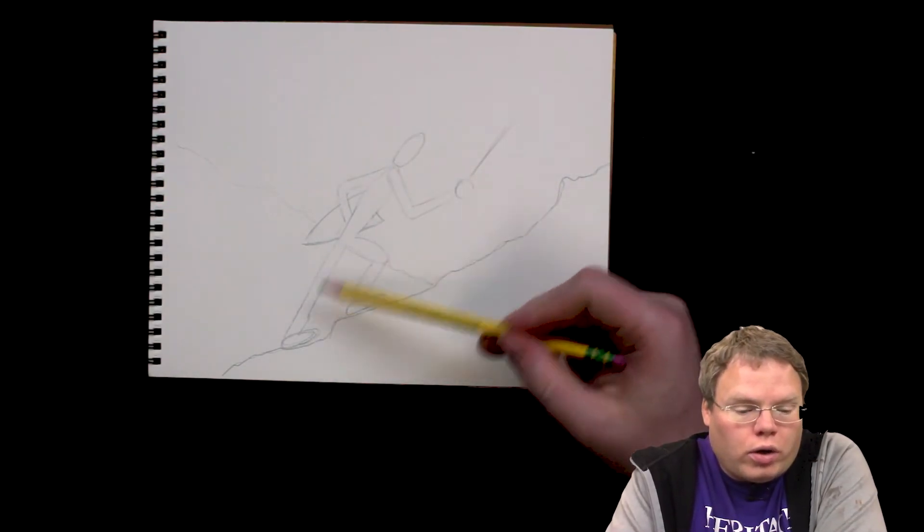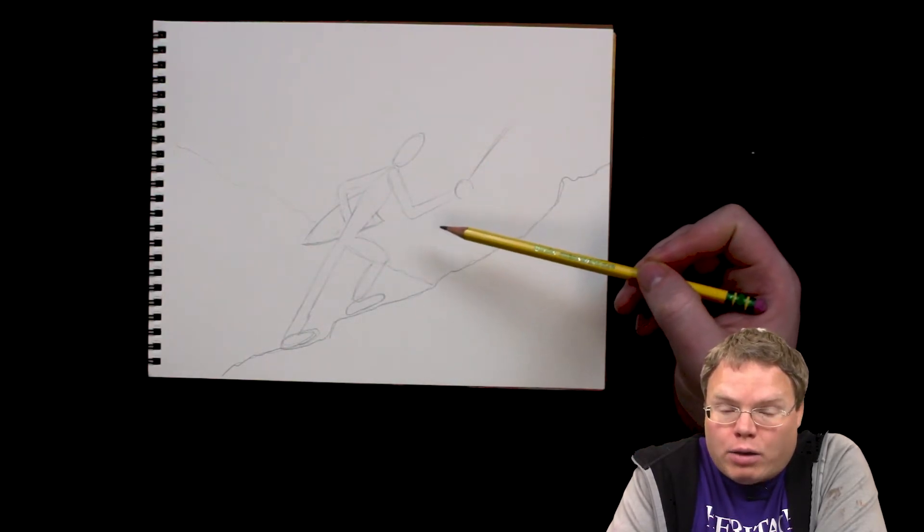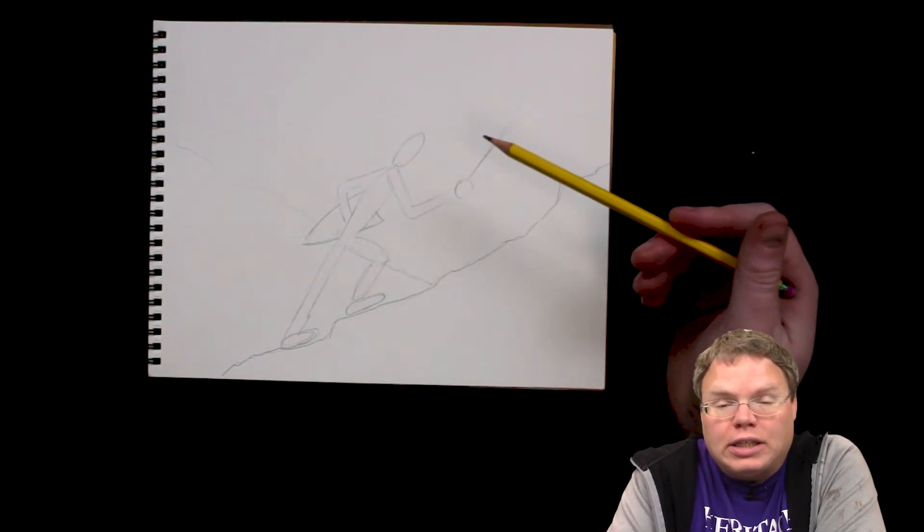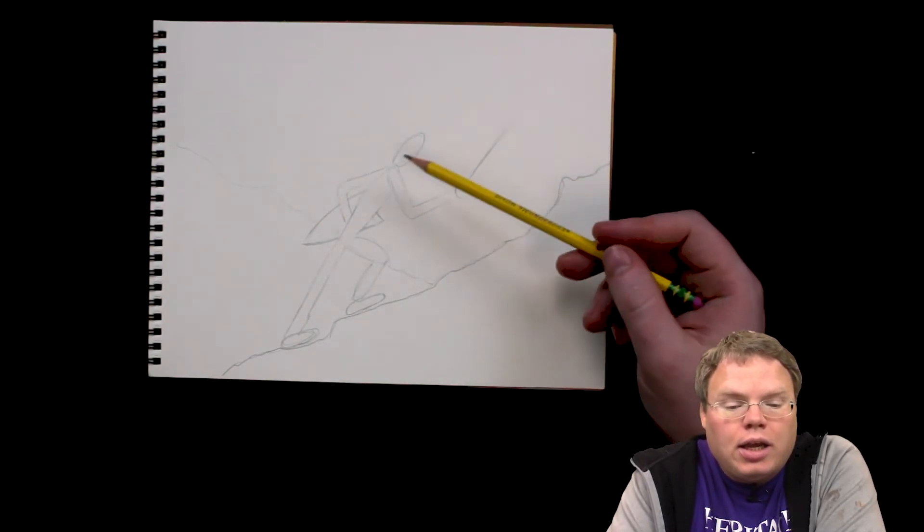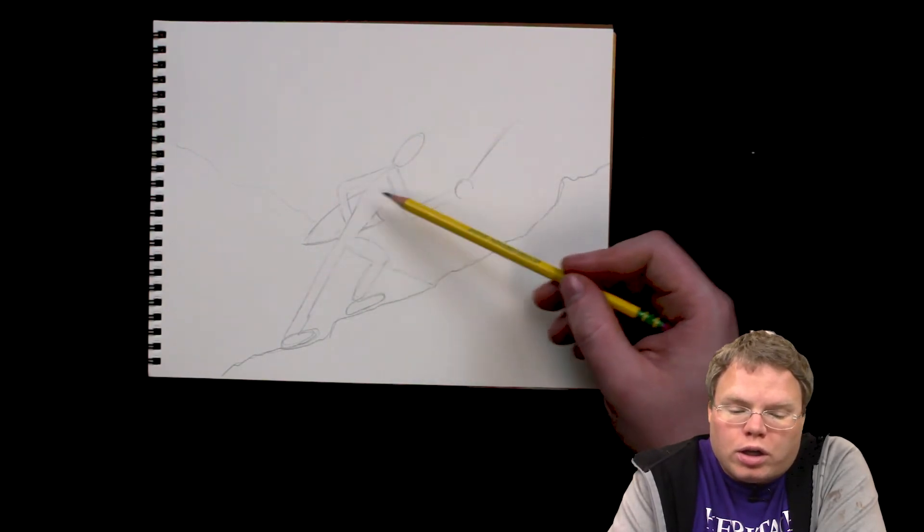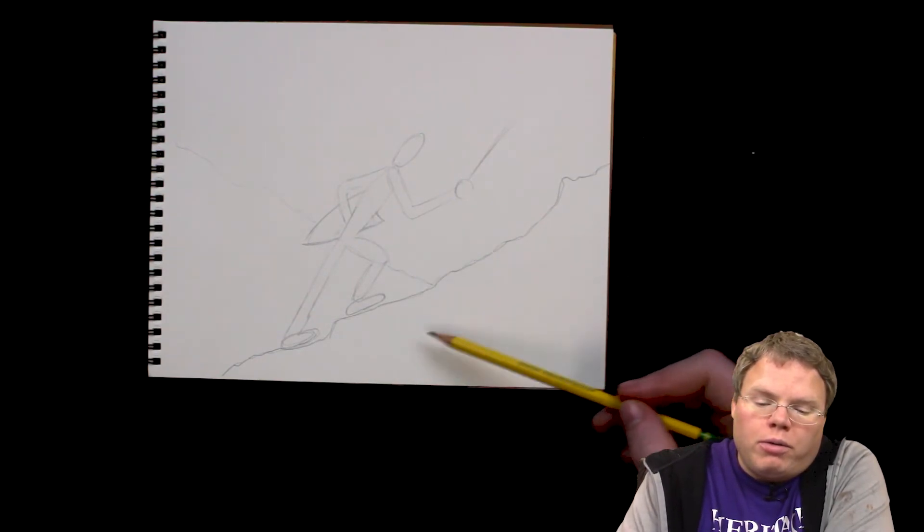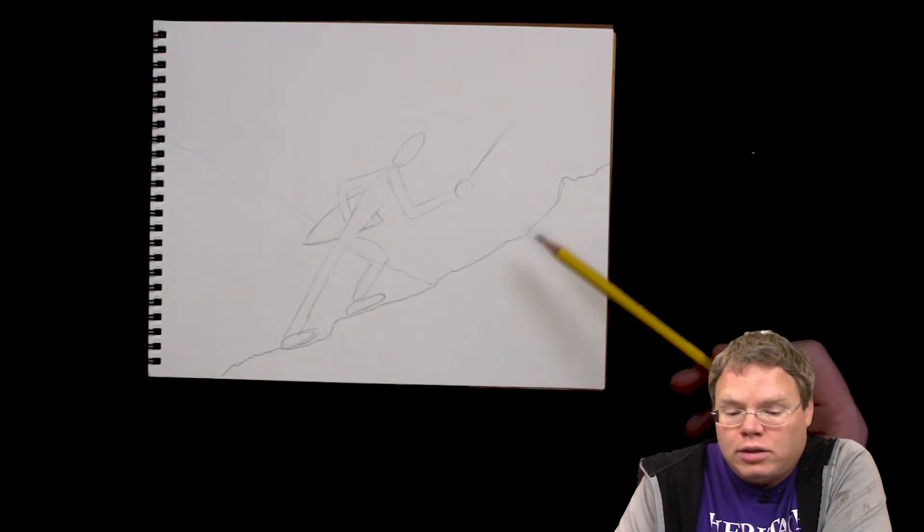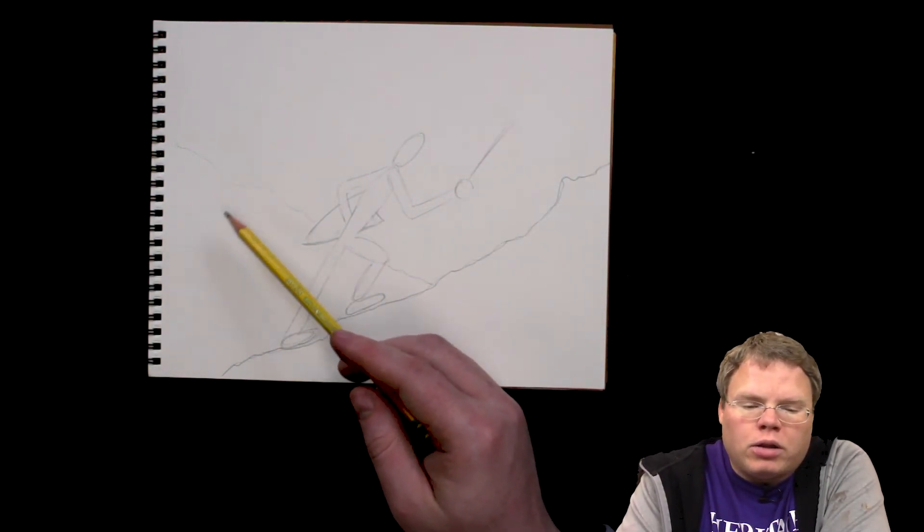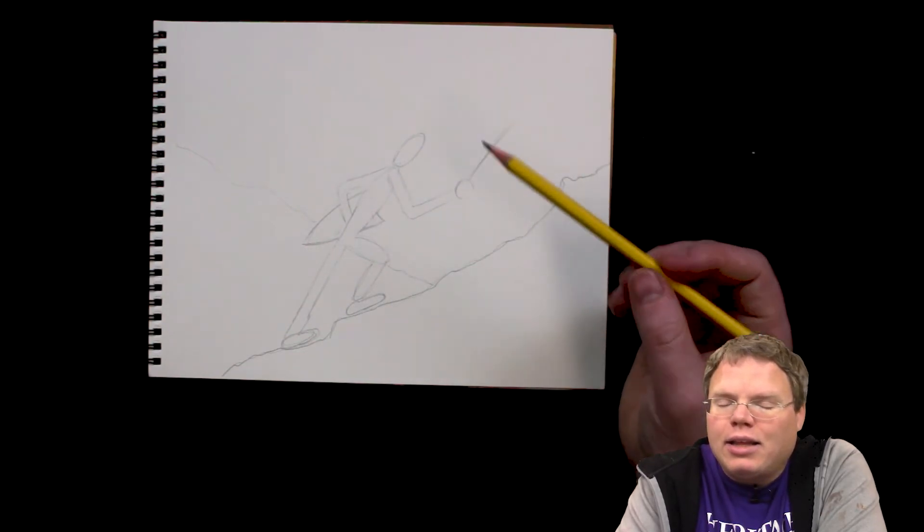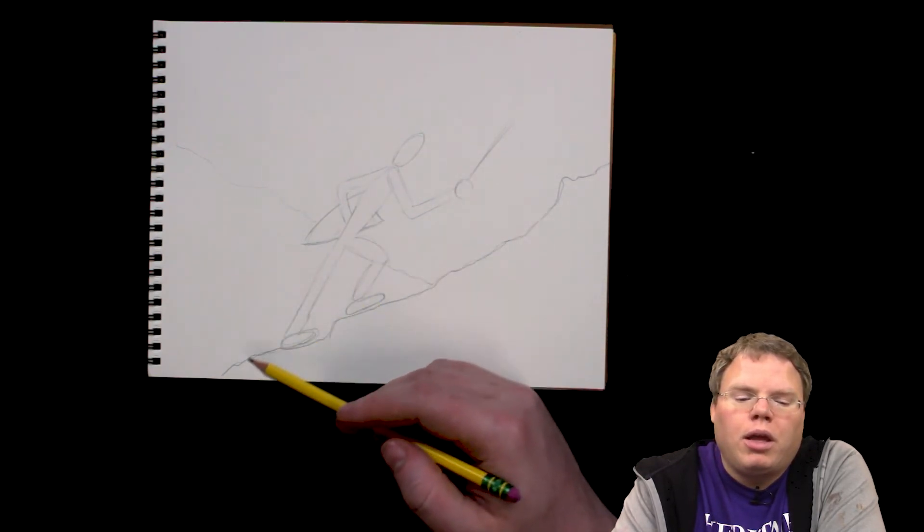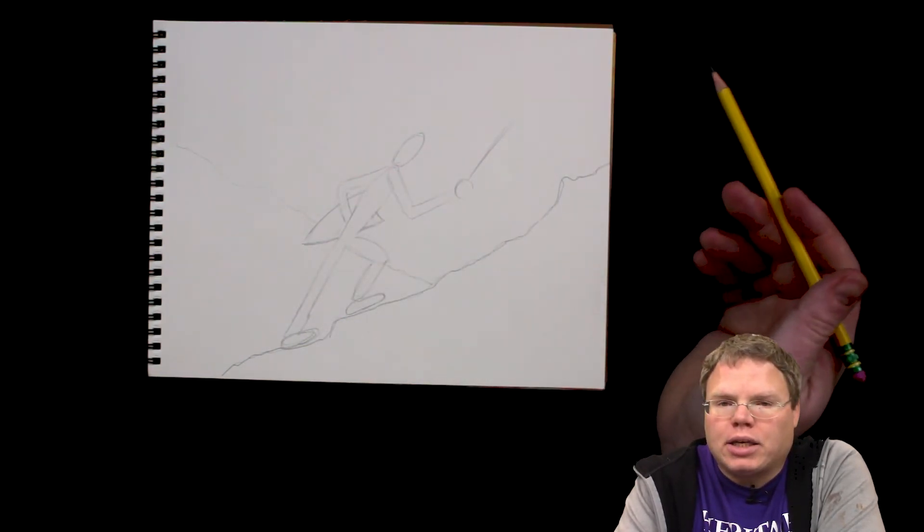Once you've got the construction and the basic layout, the basic plan, then you go back in and you add whatever details are needed. The face, the hair, what kind of sword is this? What clothes is this guy wearing? What other plants and rocks and stuff are on the ground? Is this snow on the mountain? What does the distant mountain look like? Are there any birds or anything flying in the sky? Any little details like that that you need to add to your picture. Those come after we've got this basic foundation.